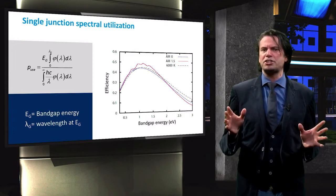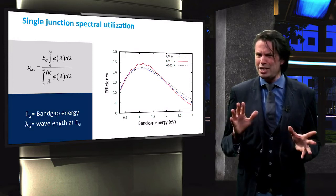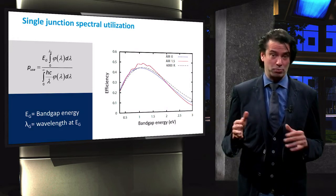Naturally, the usable fraction depends on the irradiance characteristics. Therefore it differs slightly between AM 1.5 spectrum on Earth,